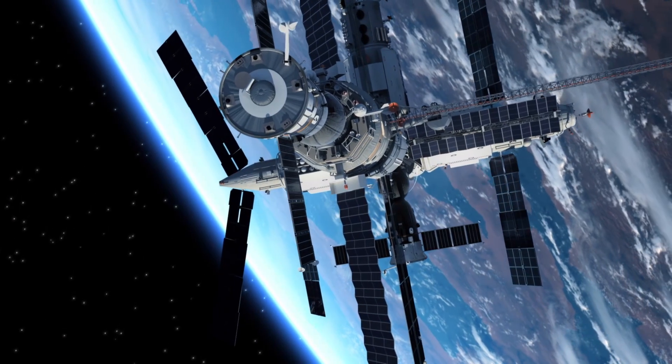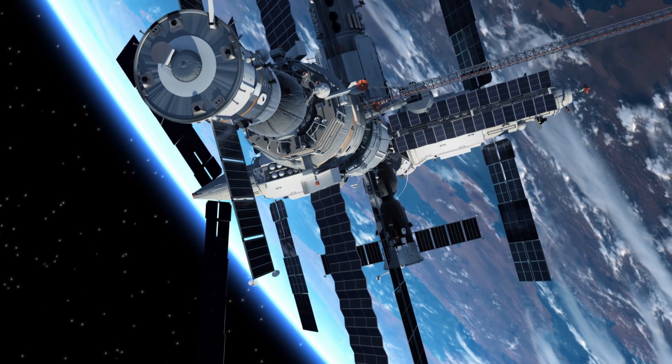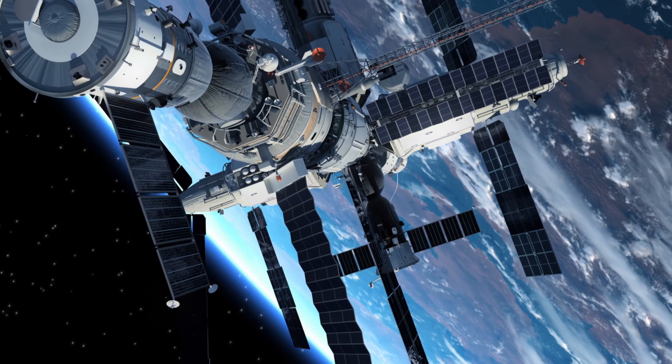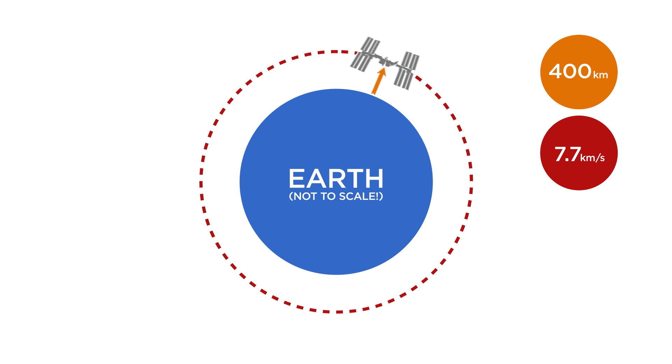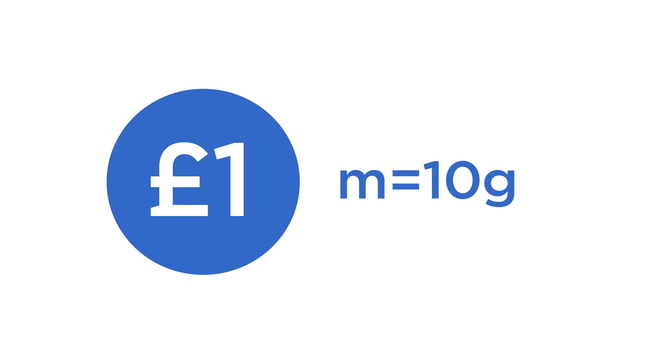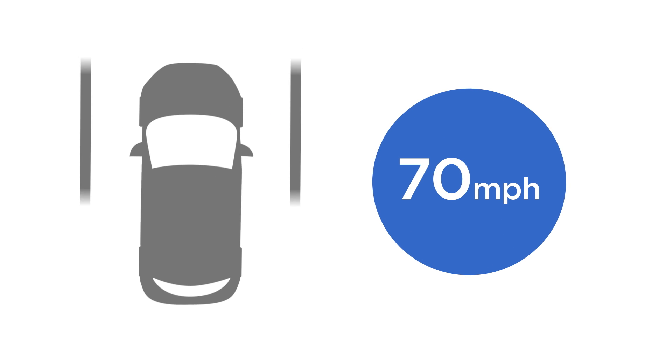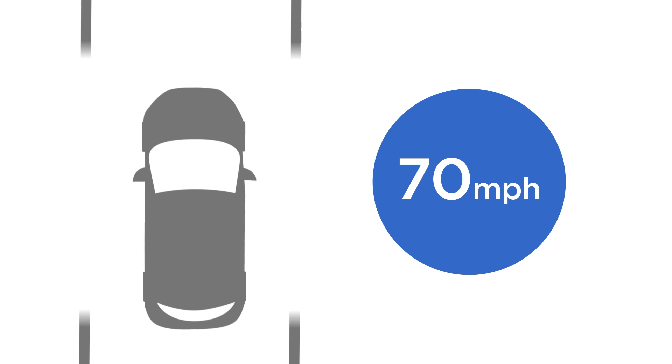This has major implications for any spacecraft orbiting the Earth, for example, the International Space Station, which orbits the Earth at 400 kilometers altitude at around 8 kilometers per second. At that speed, the kinetic energy of this one-pound coin, which has a mass of only 10 grams, is about the same as my car when it's traveling at 70 miles per hour down the motorway.